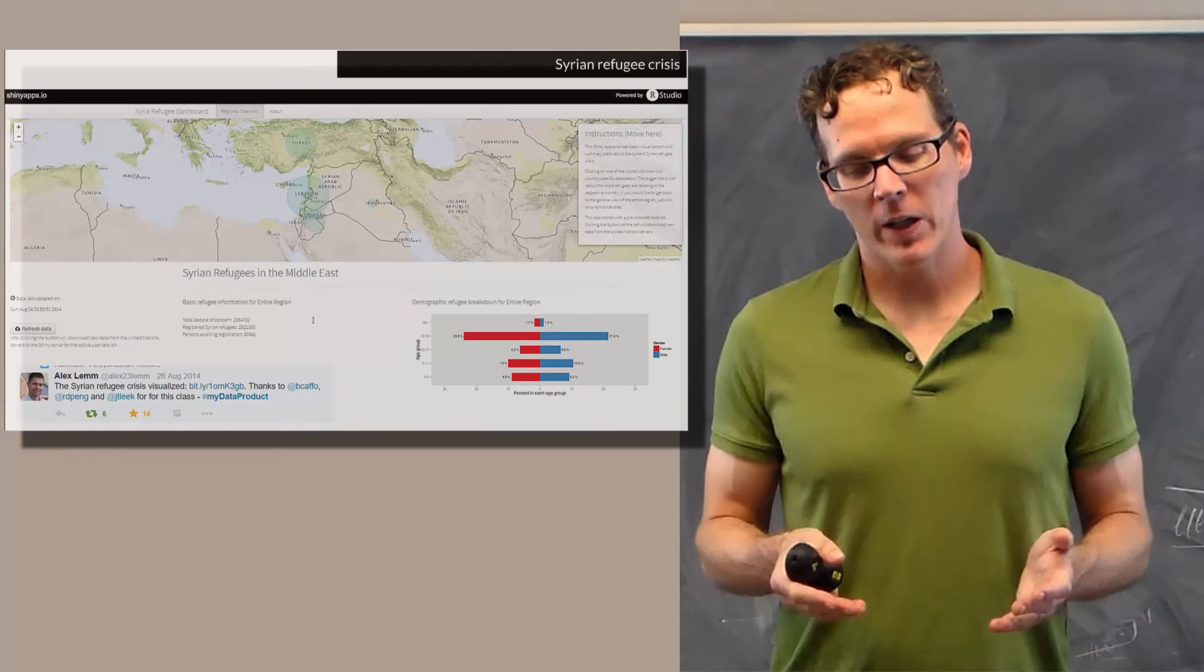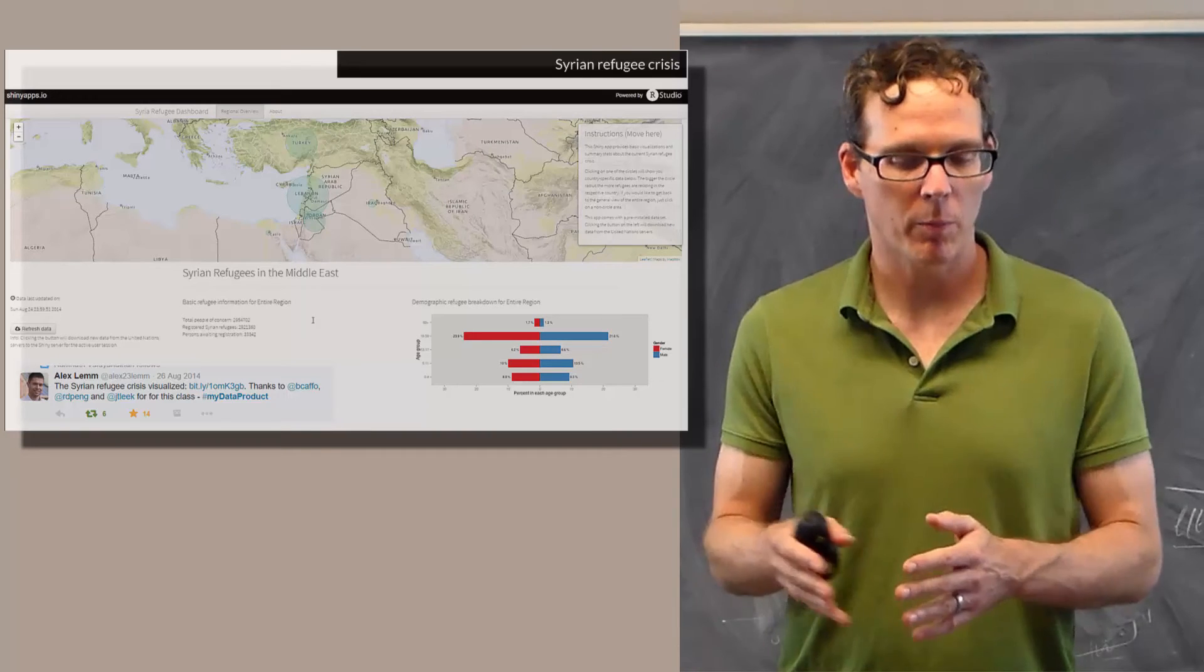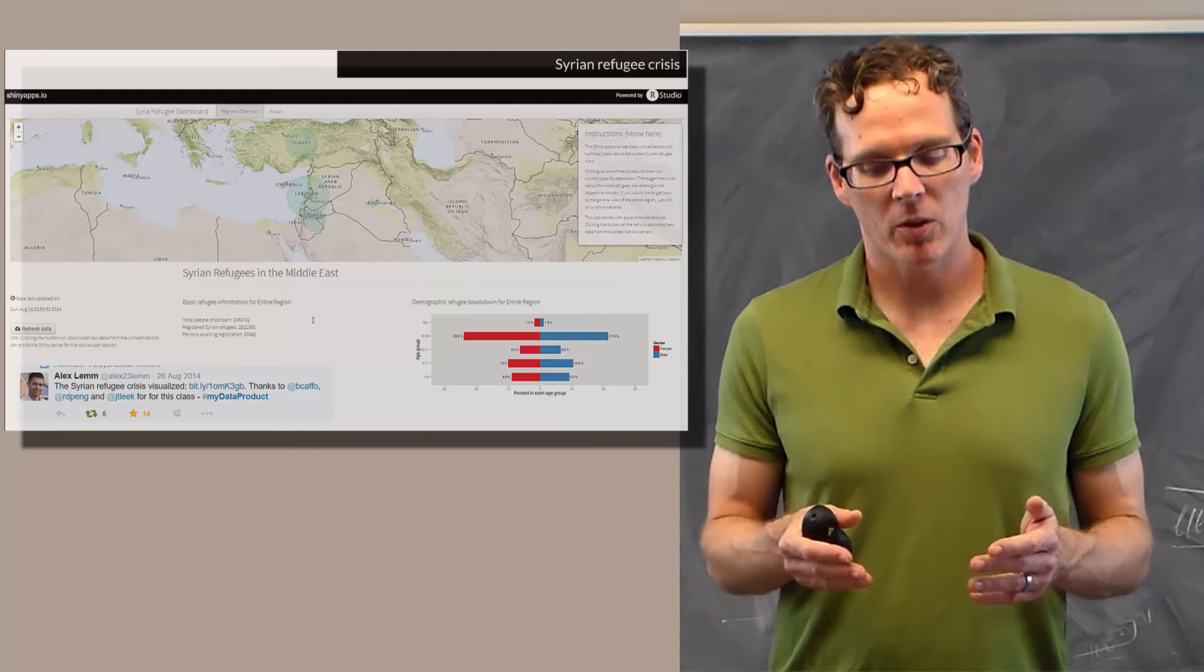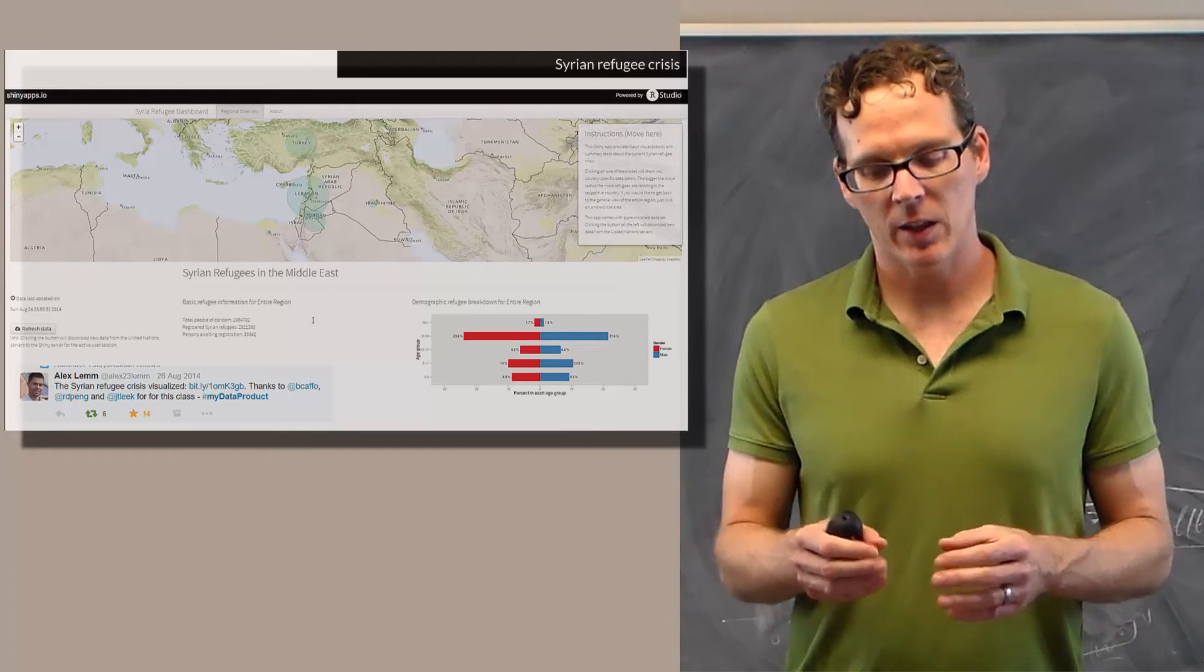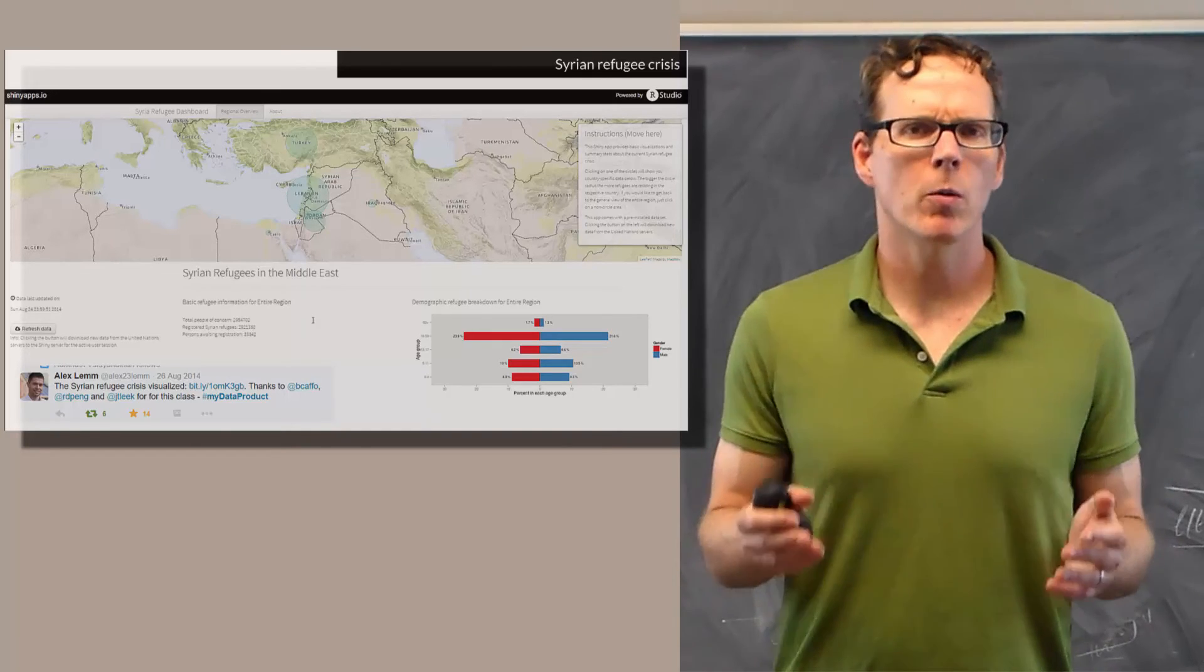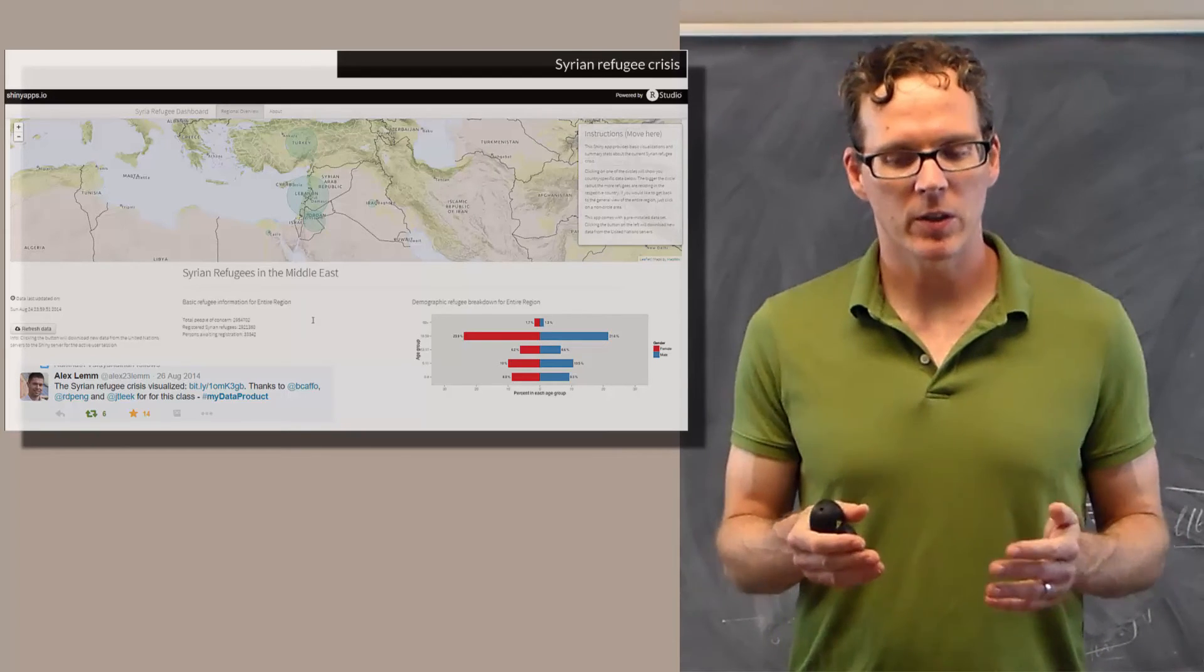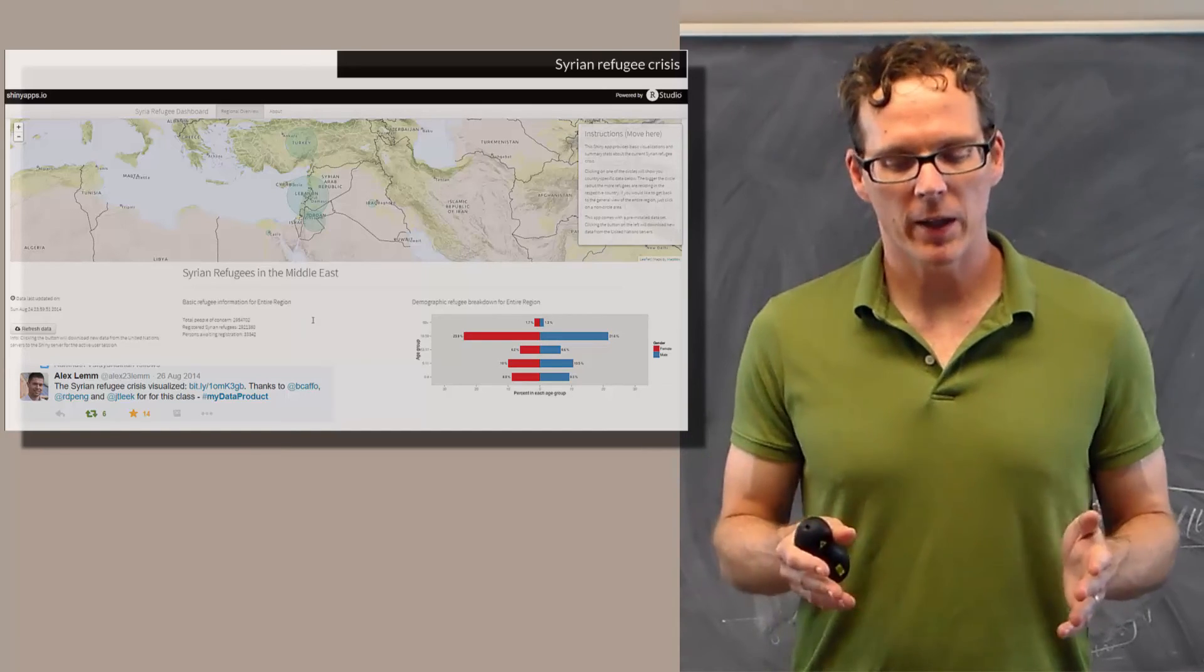Here's another great app that occurred in the Data Products class and I want to kind of harp on one specific part of this app. This was created by Alex Lem and this is an app that maps the Syrian refugee crisis. You click on a component of the map and then it gives you some demographic information about the refugees. This was well and beyond, I think, what was required for the Data Products class.